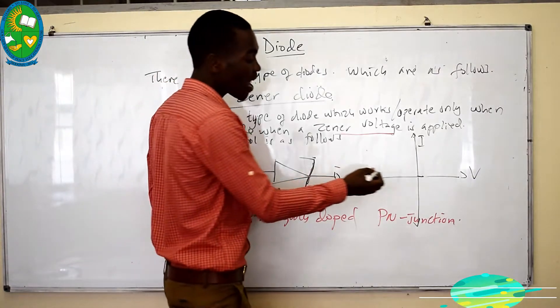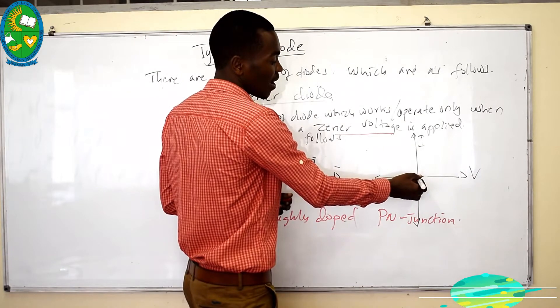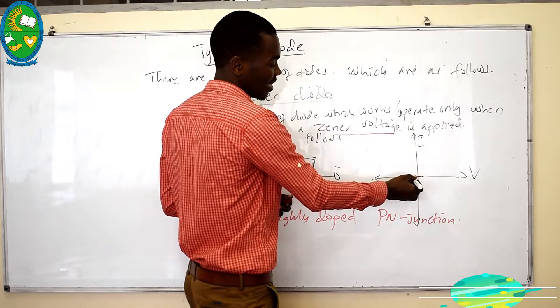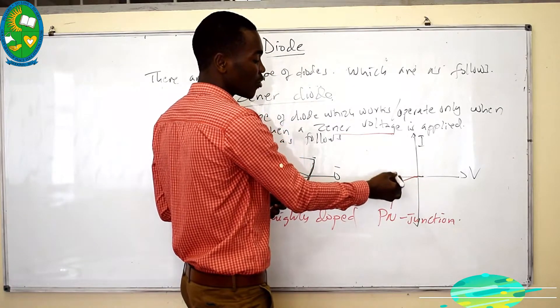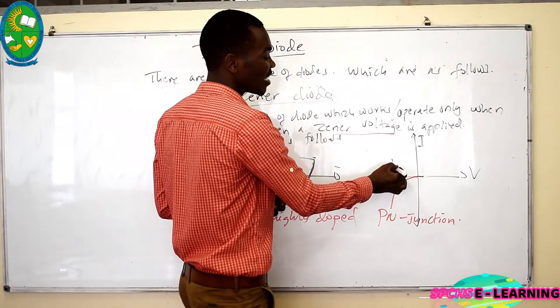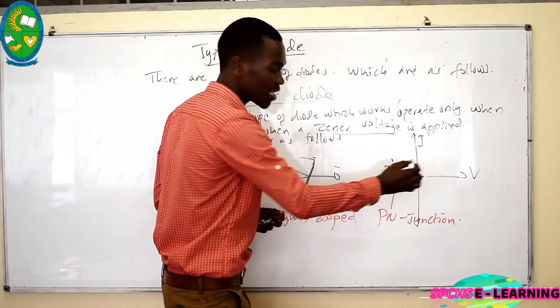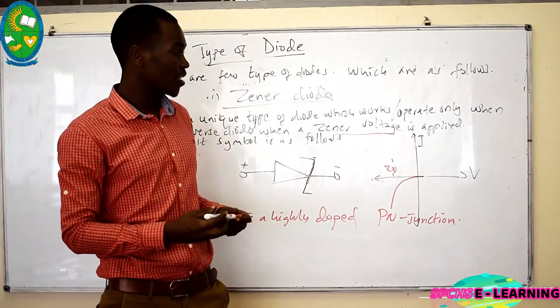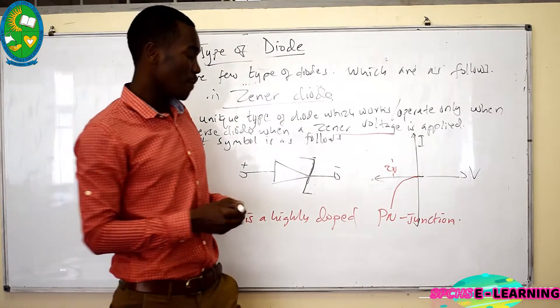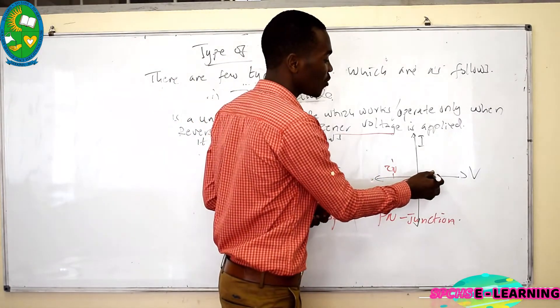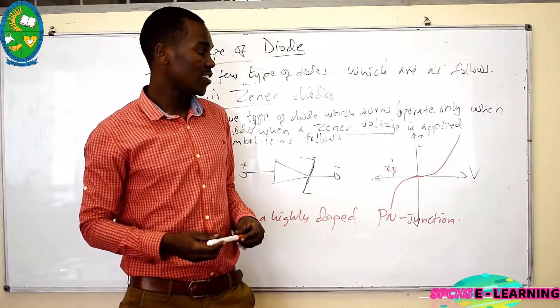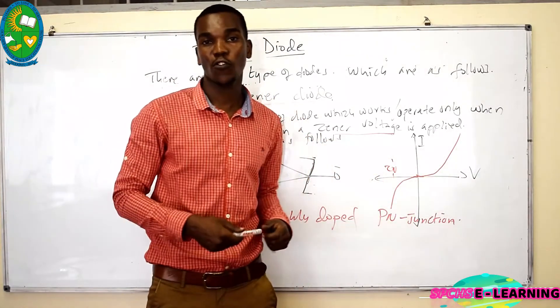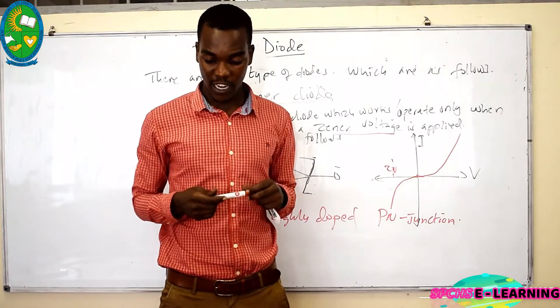When you apply a current in a Zener diode in a reverse bias, the current will start to build up on the Zener diode. When it reaches this Zener voltage it will start to conduct linearly. But also it can work as a normal diode. If you apply it in a forward bias it will start to conduct like that. This gives us the IV characteristics or the current-voltage characteristics of a Zener diode.